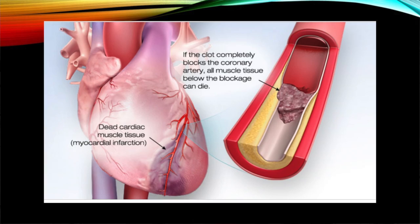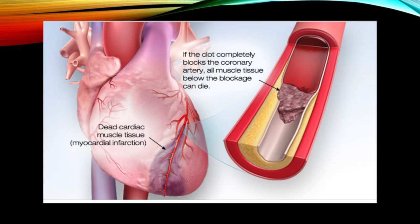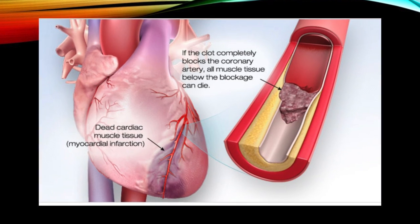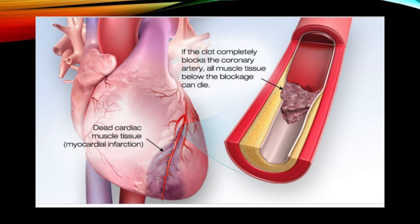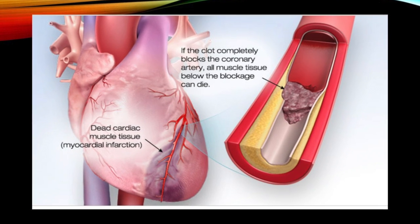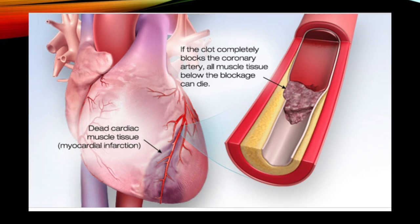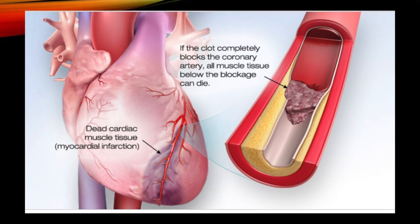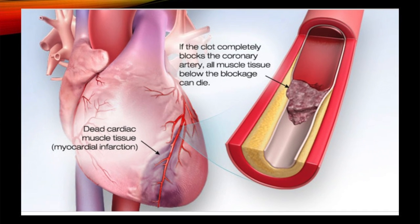A heart attack is a plumbing problem, a circulation problem. In a heart attack, one of the coronary arteries — the pipes that connect the aorta to the heart muscle — is blocked, stopping blood rich in oxygen and nutrients from reaching part of the heart, causing it to die.